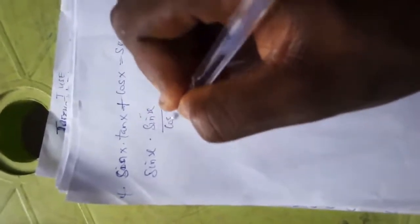Now remember my first trick. My first trick says convert every other identity that is not sine and cos to sine and cos. So you can see I have tan x here. So what I can simply do is that sine x times... Now recall that tan x is sine x over cos x, plus cos x.